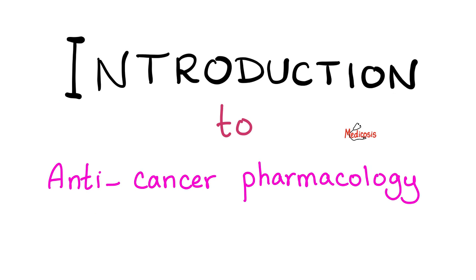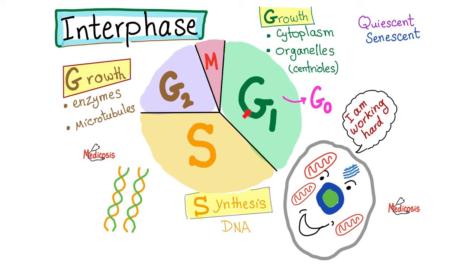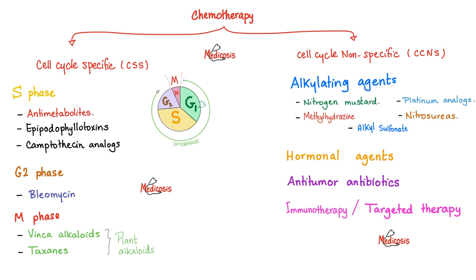Introduction to chemotherapy. To understand it, you need to understand the cell cycle first. G is for growth — there is a G1 and G2 phase. S is for synthesis — synthesis of DNA, also called DNA replication. M is for mitosis — the actual cell division when one cell becomes two. G0 is the resting phase. Then G1 is growth — preparing for synthesis. Then S: make another copy of the DNA. Then G2: grow more and prepare for mitosis. When it comes to anti-cancer medications, we divide them into cell cycle specific and cell cycle non-specific. Cell cycle specific targets certain phases.